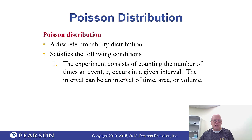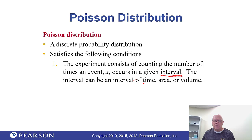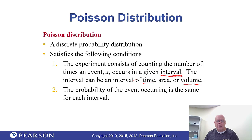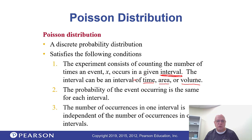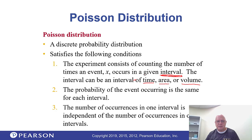The Poisson distribution follows these conditions. You start counting the number of times something happens in an interval. This is the key — we're talking about intervals. The interval can be a time period, an area such as within a seven-acre field, or a volume. The probability is the same for every interval, and the number of occurrences in one interval is independent of the other ones.